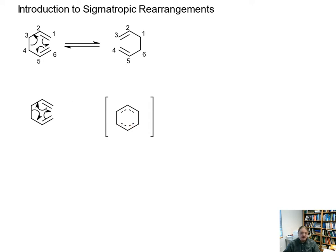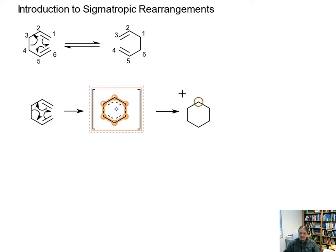And as a reminder, in drawings like this, all of the dashed bonds are bonds that are partially formed or partially broken on our way from the reactant to the product.